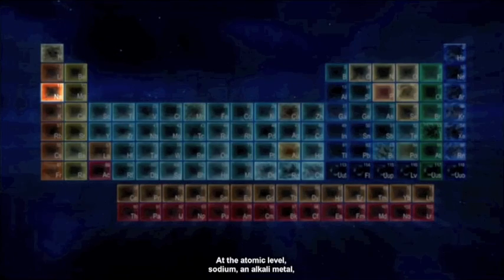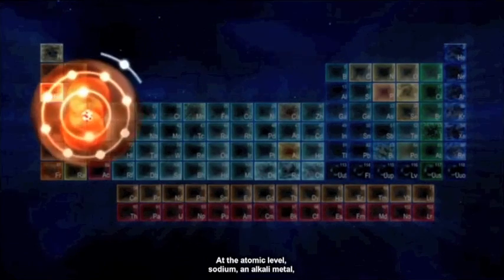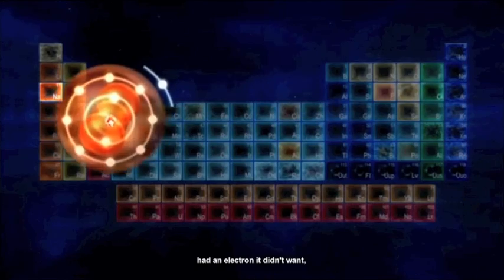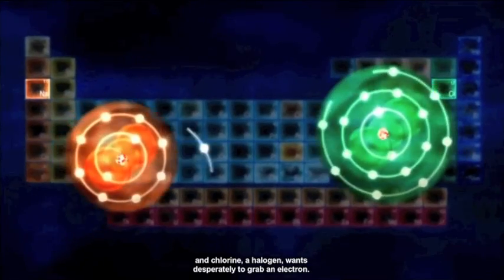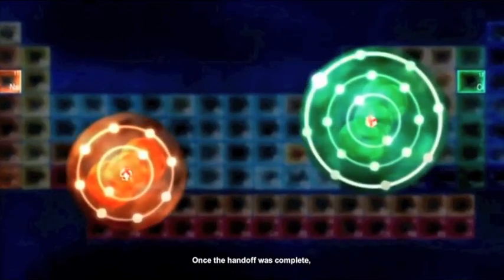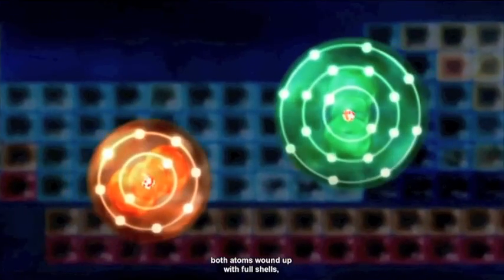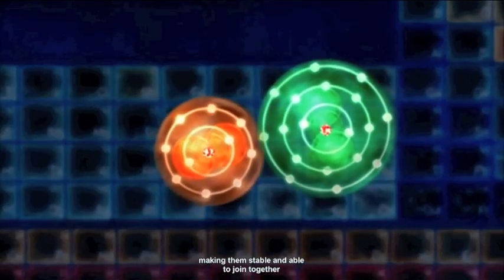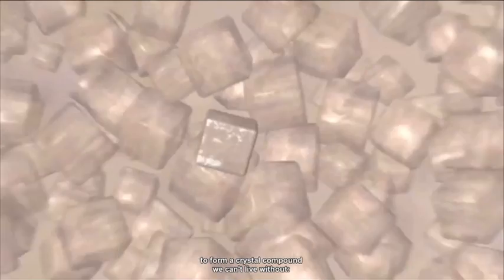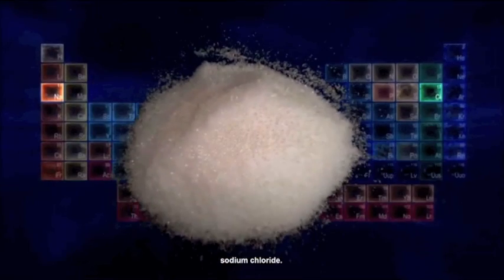At the atomic level, sodium, an alkali metal, had an electron it didn't want. And chlorine, a halogen, wants desperately to grab an electron. Once the handoff was complete, both atoms wound up with full shells, making them stable and able to join together to form a crystal compound we can't live without: sodium chloride, table salt.